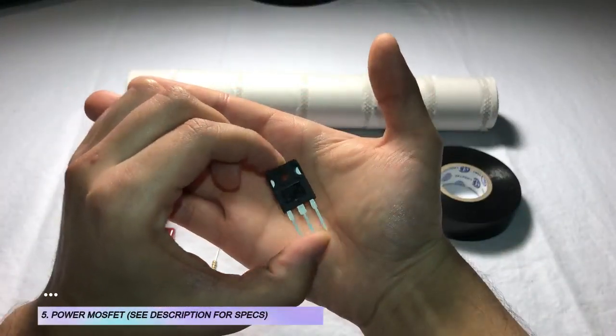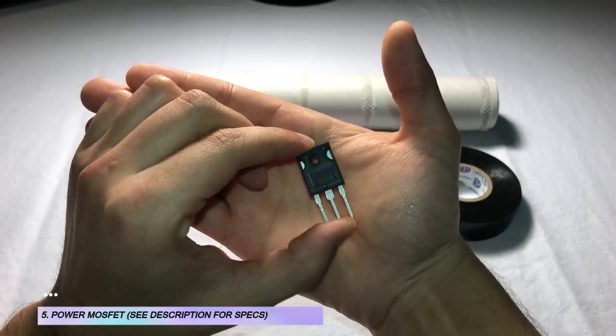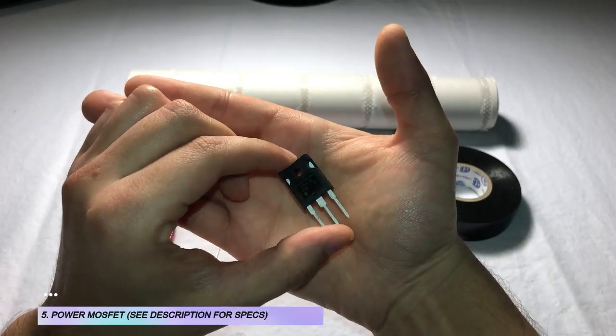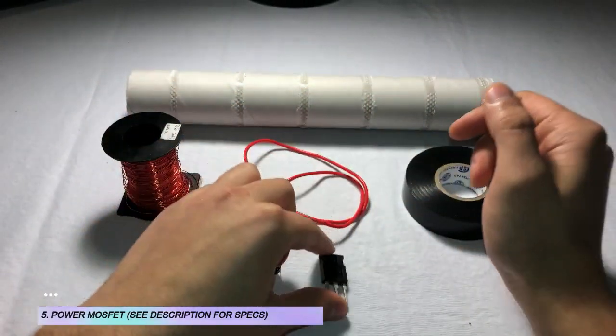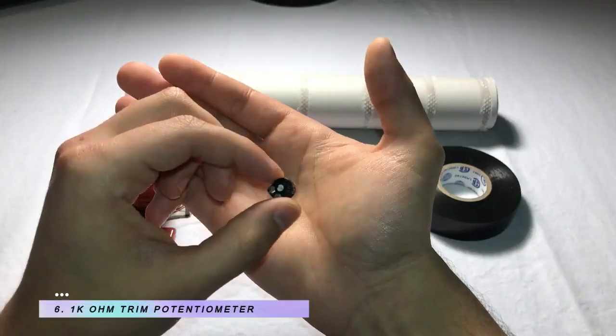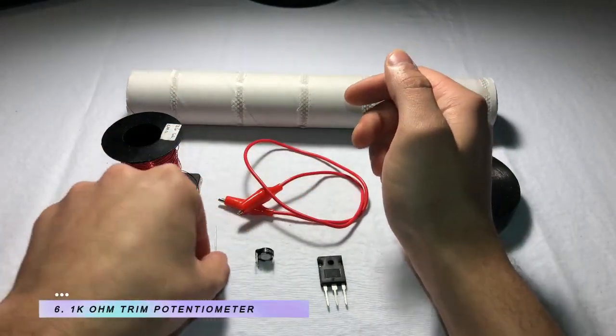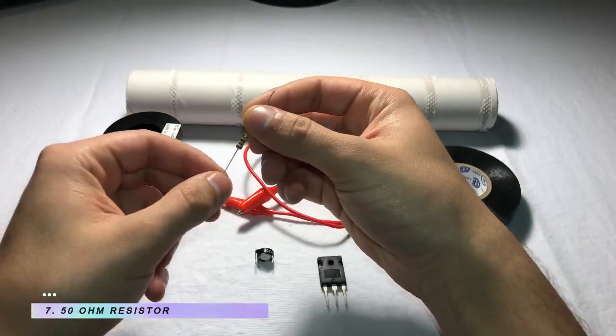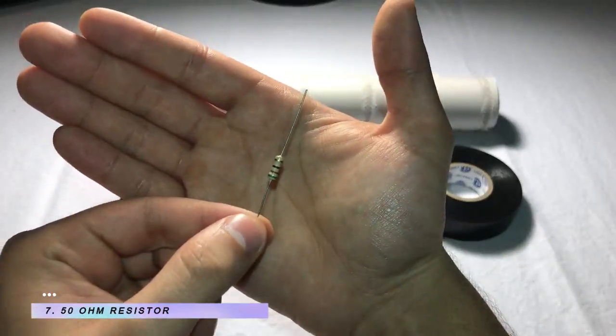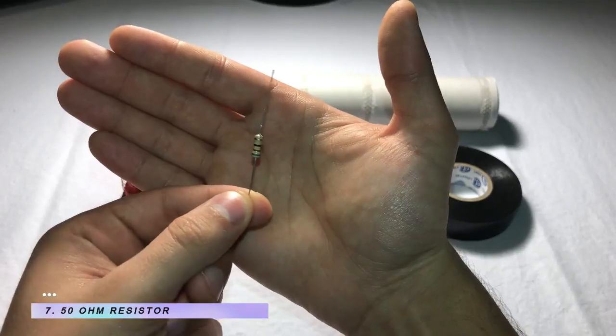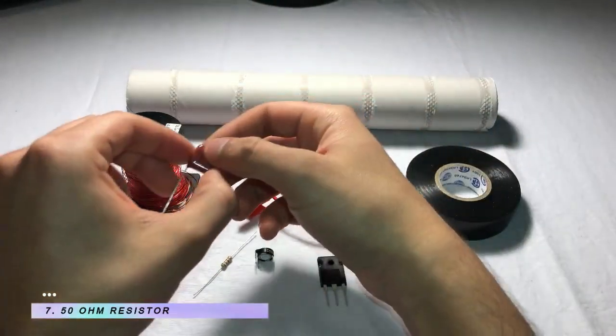a power MOSFET, I'm using an IRF-P250 but you can use any similar rated MOSFET. This one's 200 volts and 30 amps, a 1 kilo-ohm trim potentiometer,